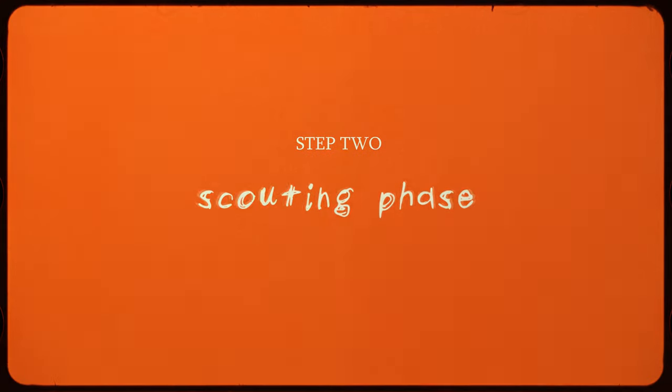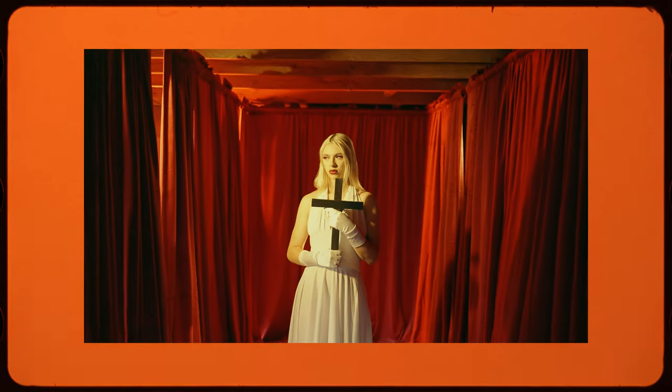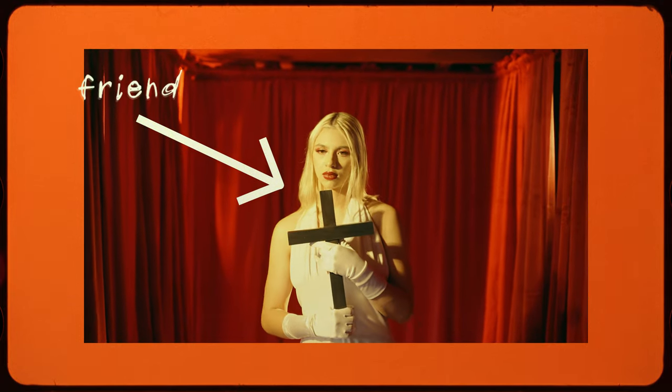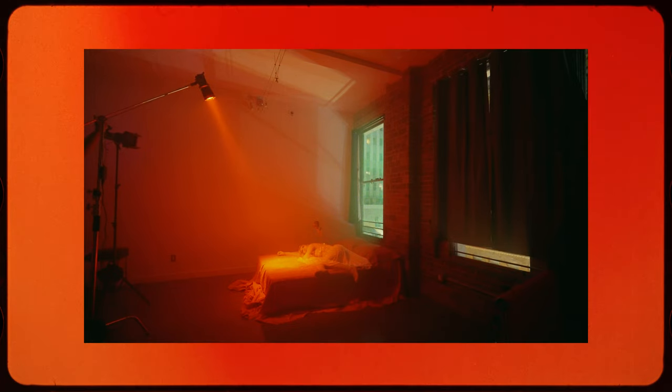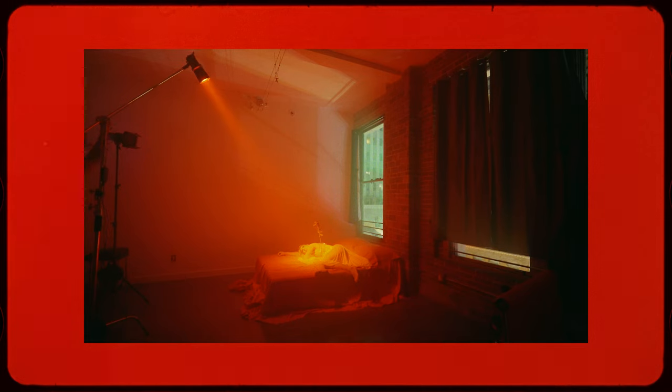Once I have a concept mapped out I begin the scouting phase, where I look for two things: what model I'm going to shoot with and where I'm going to shoot. For the model I typically like to just ask friends, because when shooting with friends we have better chemistry, it's less pressure, and if the photos don't come out great we can just laugh it off. If friends are busy I put out a casting call on Instagram and sift through replies to find someone who'd be a good fit.